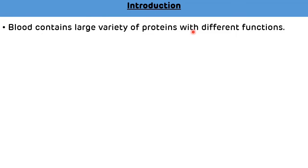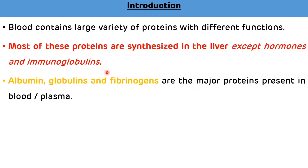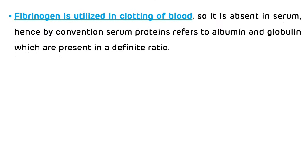Introduction: blood contains a large variety of proteins with different functions. Most of these proteins are synthesized in the liver, except hormones and immunoglobulins. Albumin, globulin, and fibrinogen are the major proteins present in blood or plasma. Fibrinogen is utilized in the clotting of blood, so it is absent in serum.